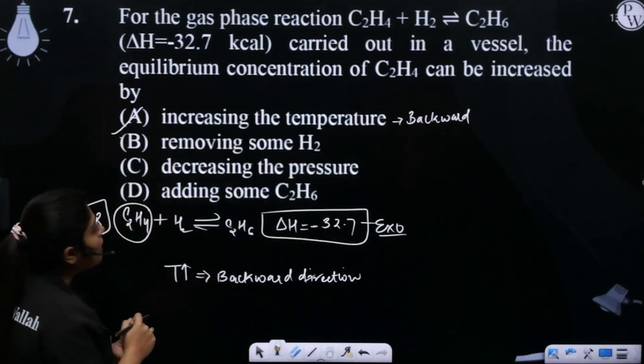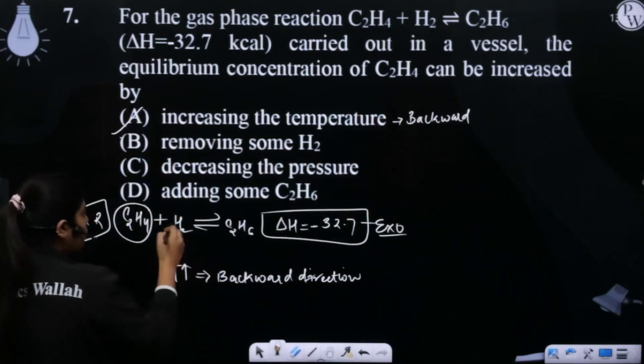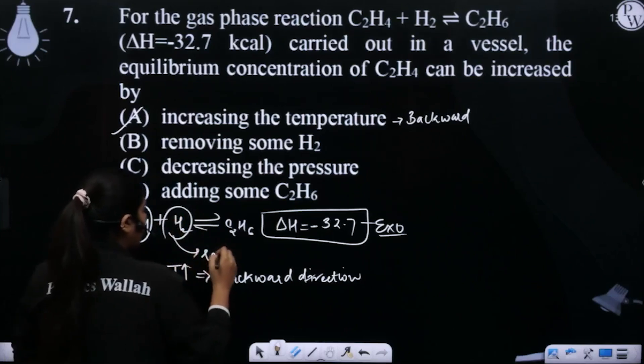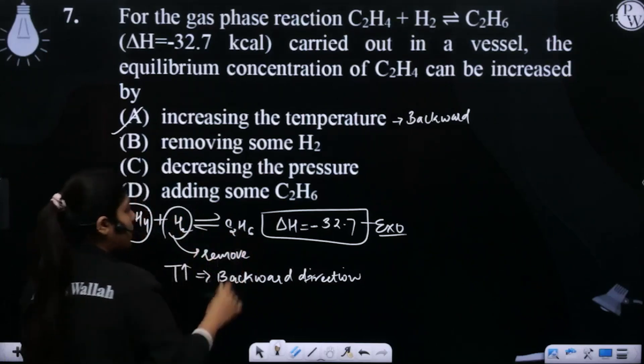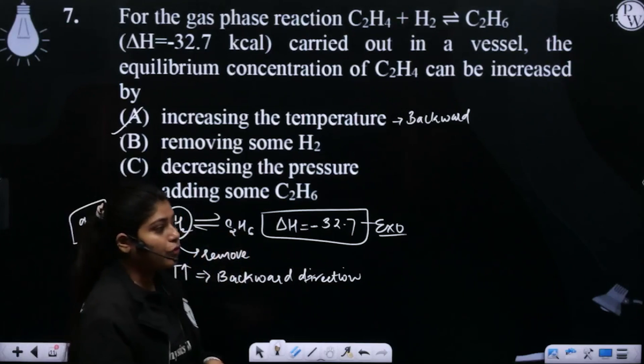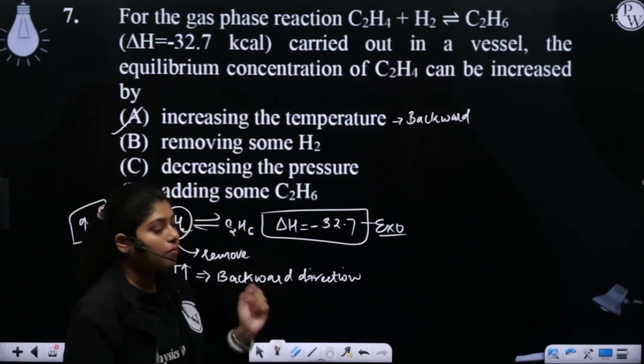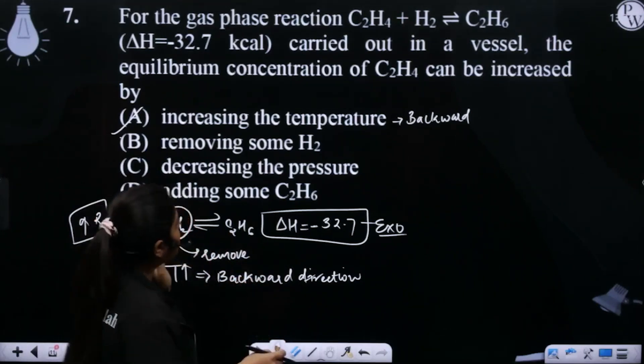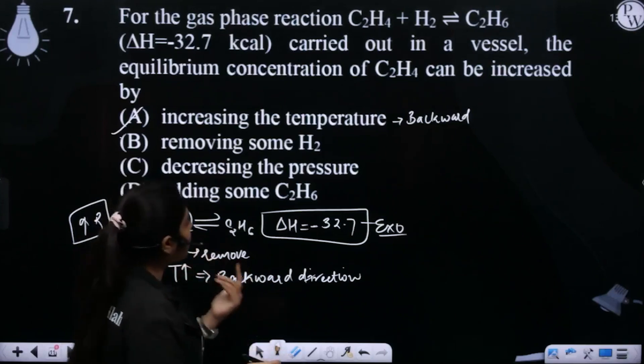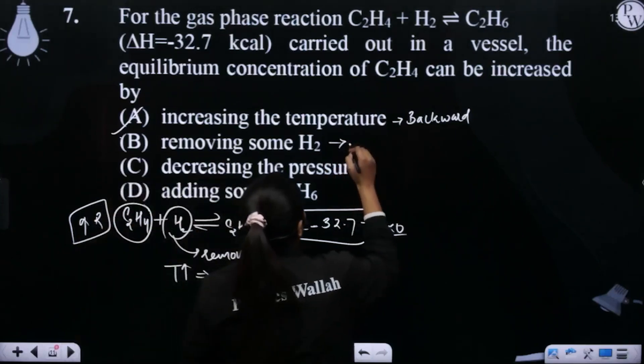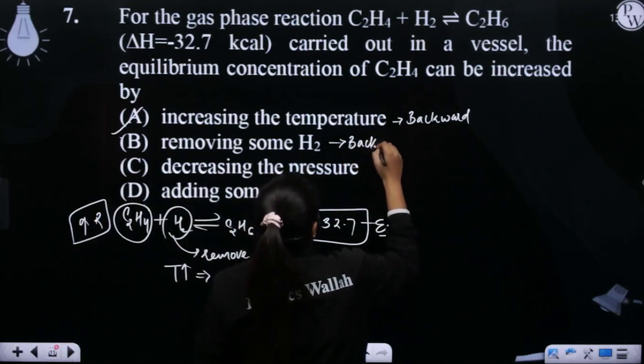Option B - removing some H2. If the amount of reactant is reduced, the reaction will go backward. So C2H4 will increase. This is also backward, so this is another correct answer.